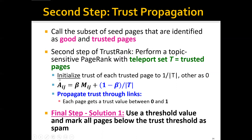The stochastic matrix has two terms. The first term is beta times M, where M is the original stochastic matrix. The second term is (1 - beta) over the size of T, which is the teleport term. We propagate trust through the links, and each page gets a trust value between 0 and 1. As a final step, we use a threshold value and mark all pages below that trust value as spam.